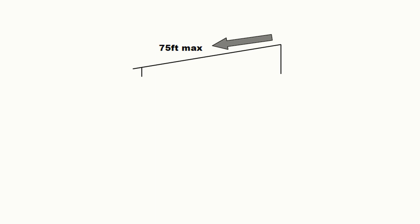Two-piece clips typically max out at plus or minus one inch of thermal movement, which can limit the overall length of a roof panel. In the graphic shown, for a roof with a point of fixity at the ridge or eave, the panel length can accommodate around 75 feet, at which point thermal movement will be around one inch — at or near the limit of a floating two-piece clip.